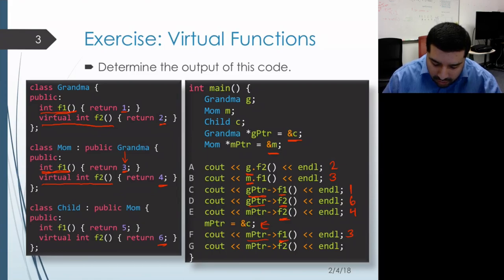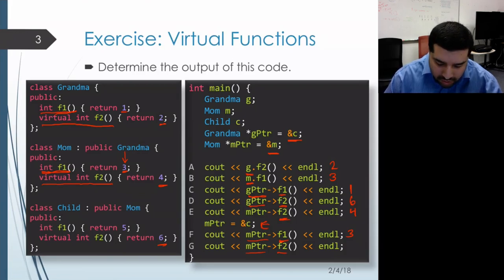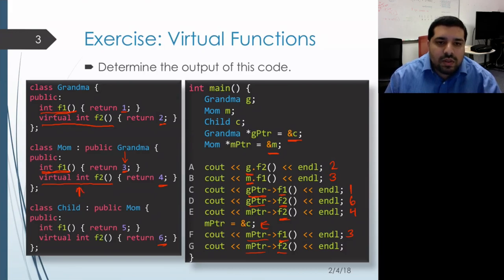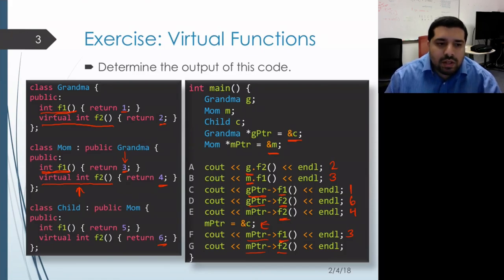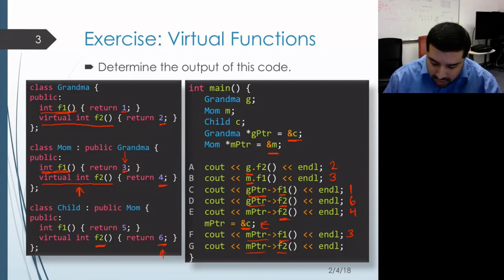Finally, we have a call to F2 on the m pointer. Once again, we start in the static type to look up the member. We look for a member called F2 within the mom class and find it there. We see that it is virtual, so this means that we get dynamic binding. The dynamic type of the receiver is actually child — we set it a couple of lines previously. Therefore, we'll get the F2 that's defined within the actual dynamic type of the object, and it's going to return the value six, and that's what gets printed out.